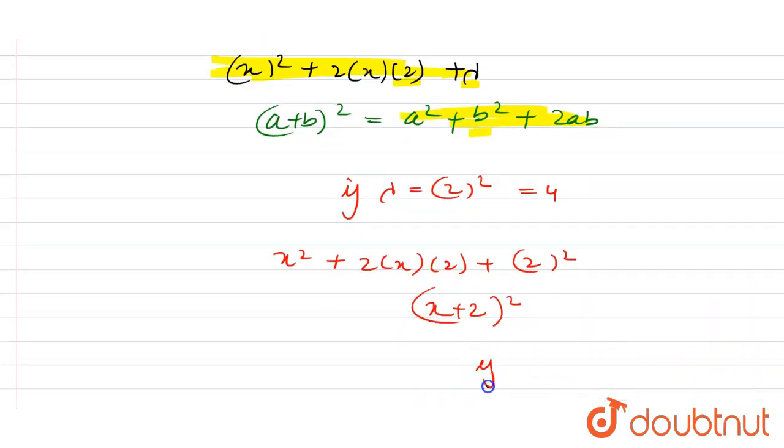So if λ equals 4, our equation is in the form of (a + b)². Therefore, λ = 4 is the answer. Thank you.